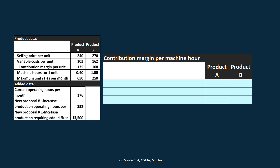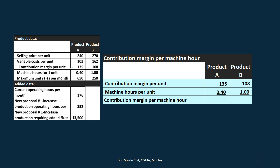First we calculate the contribution margin per machine hour. The contribution margin per unit is sales per unit minus variable cost per unit. We take $135 for A and $108 for B, then divide by machine hours — 0.4 for A and 1 for B. That gives us a contribution margin per machine hour of $337.50 for A (135 ÷ 0.4) and $108 for B (108 ÷ 1).